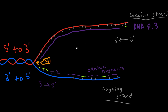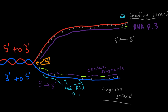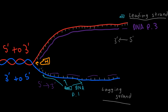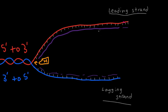Once DNA polymerase 3 has coded throughout the whole DNA and its job is done, DNA polymerase 1 comes in. DNA polymerase 1 comes into contact with all the primers and removes them, replacing them with DNA nucleotides. However, it does leave these fragments behind.